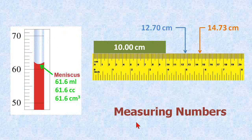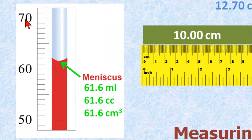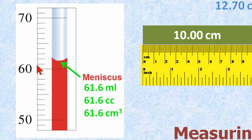Let's talk a bit about measuring numbers. On the left here, we have a representation of a graduated cylinder. It's graduated in units of milliliters, which is the same as cubic centimeters, cc, or can be abbreviated cm cubed, cubic centimeters.